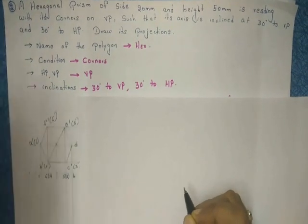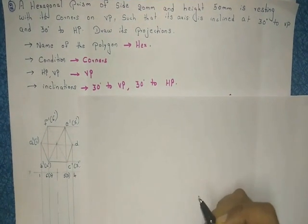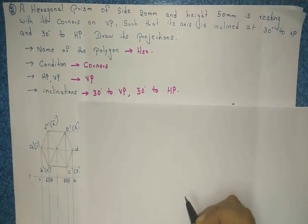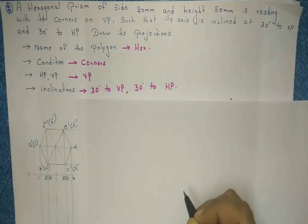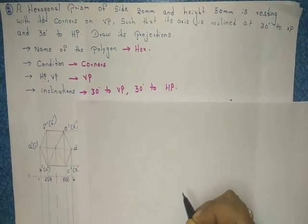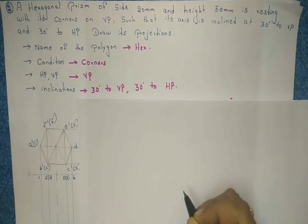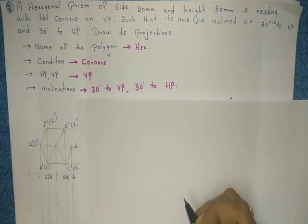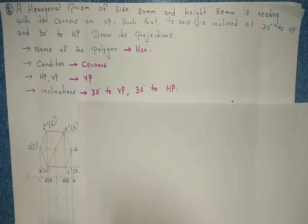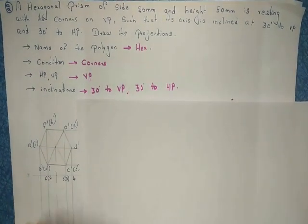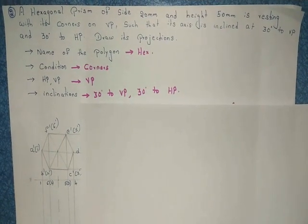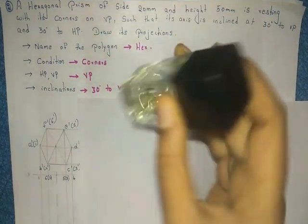Hello students, we completed Lecture 1 and now this is Lecture 2. In Lecture 1 we studied about projection of solid surfaces, the major difference between prisms and pyramids, and we solved one problem. Now we are going to solve another problem, but before starting I want to show you one thing.